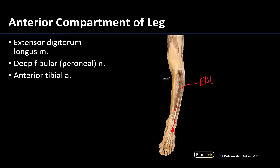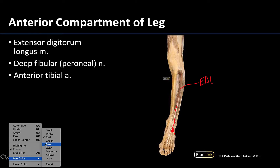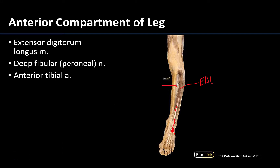You can also see in this region the complex of neurovasculature that innervates or supplies this region — that's going to be the deep fibular or peroneal nerve traveling with the anterior tibial artery, anterior to the interosseous membrane. You can see the interosseous membrane connecting the tibia and fibula right there. If you see neurovasculature in the deep anterior leg, you know you're looking at these particular structures.